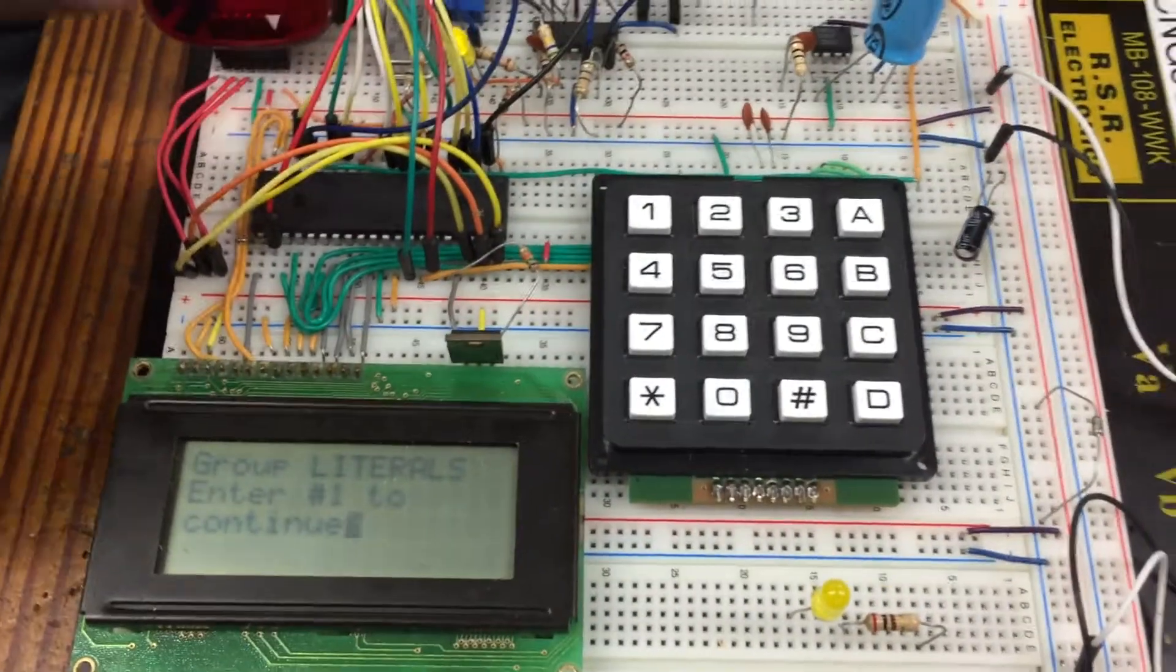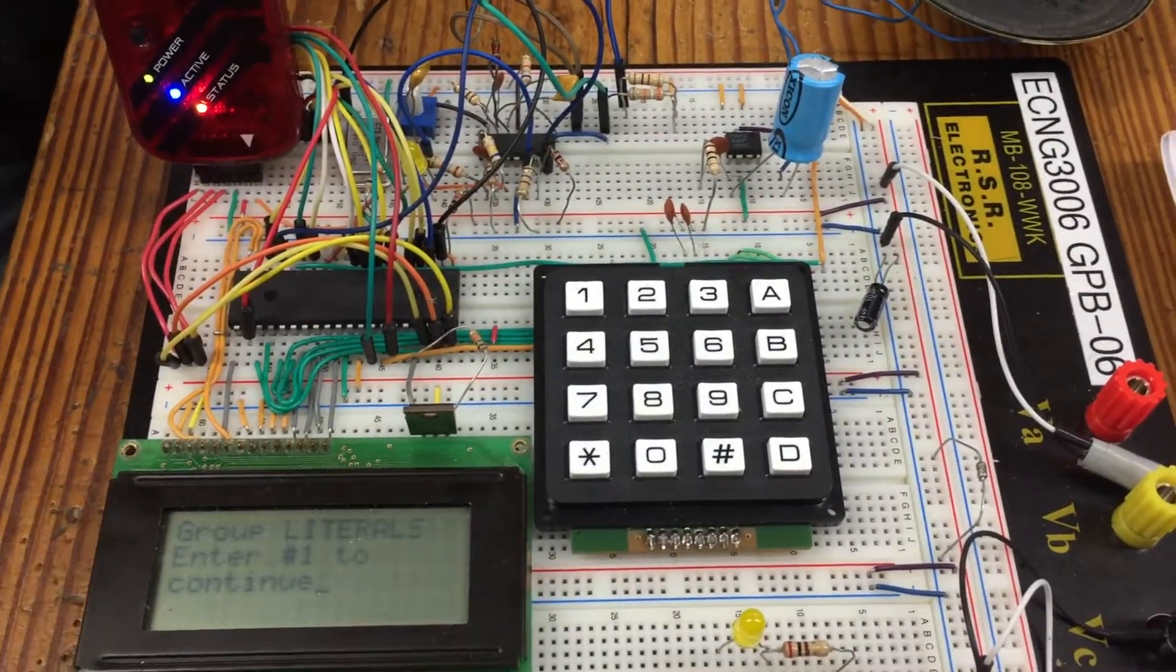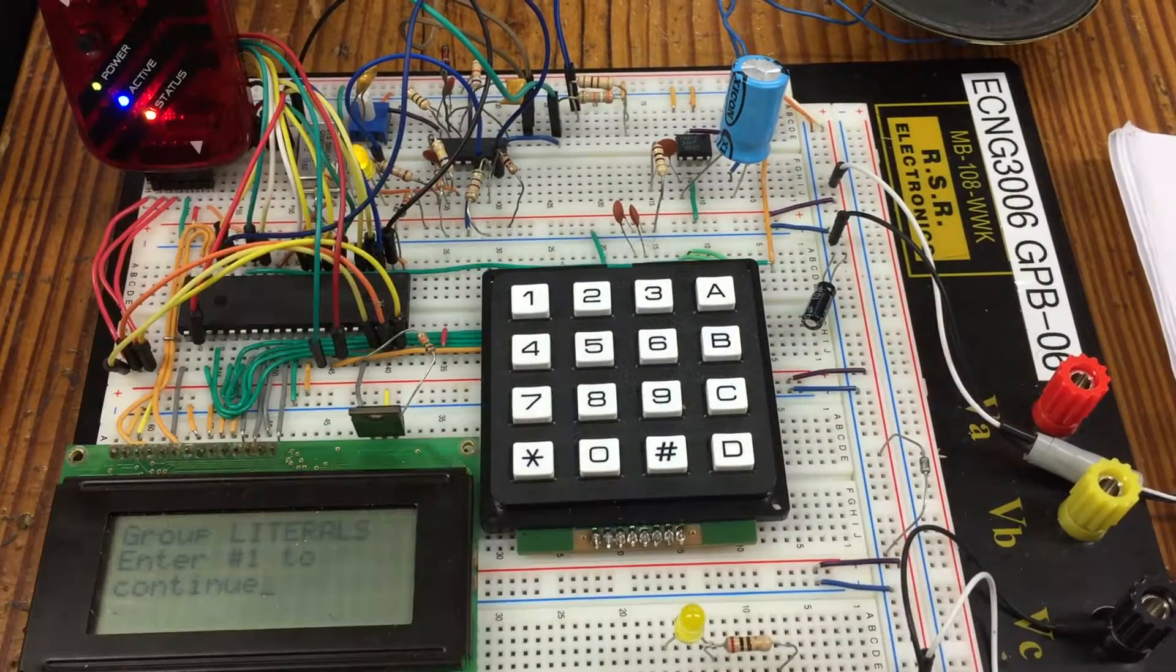So this light will flash every time it detects a high. Next the screen will say enter 1 to start to continue. So when you press 1,